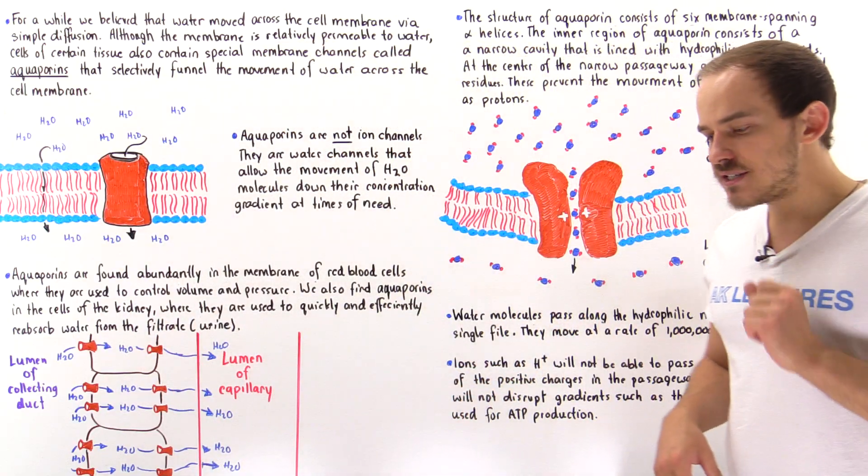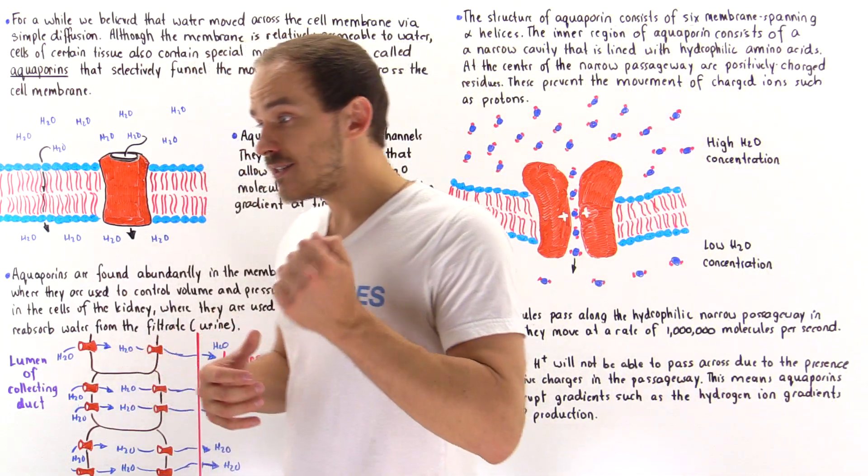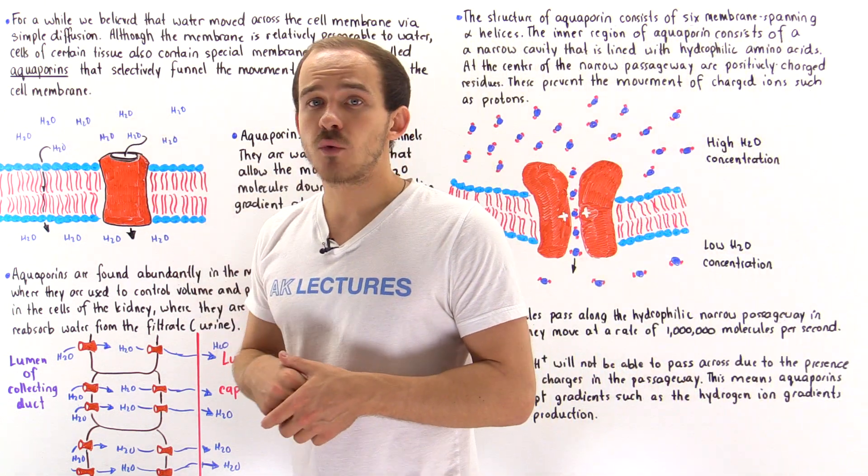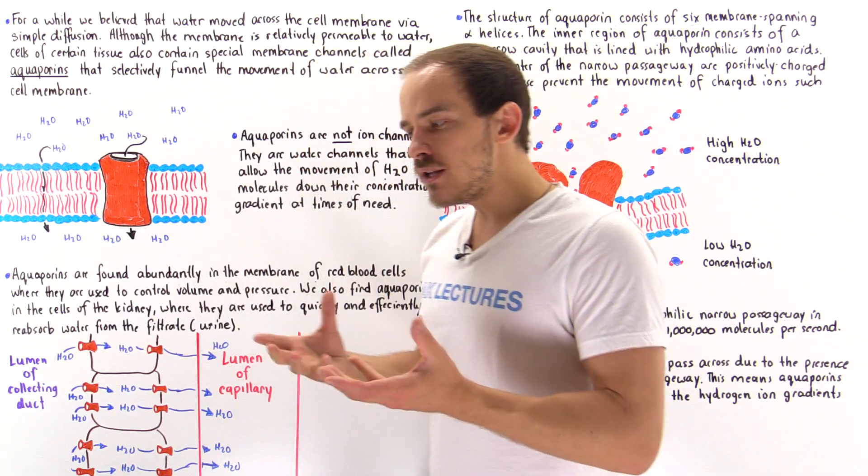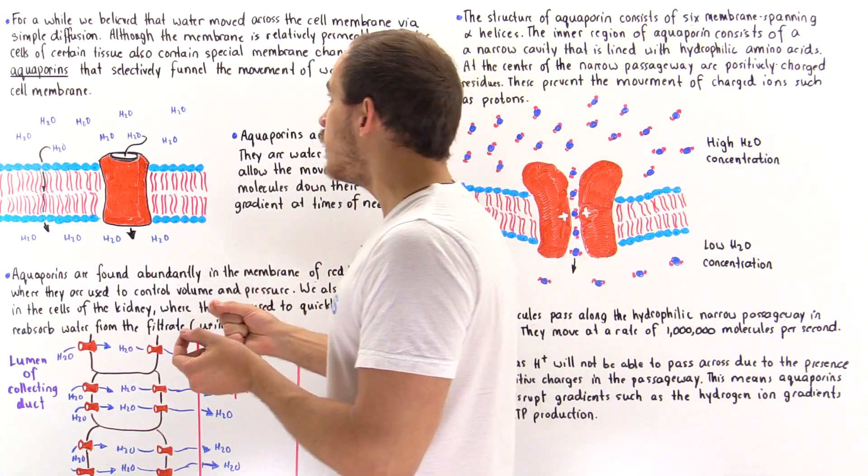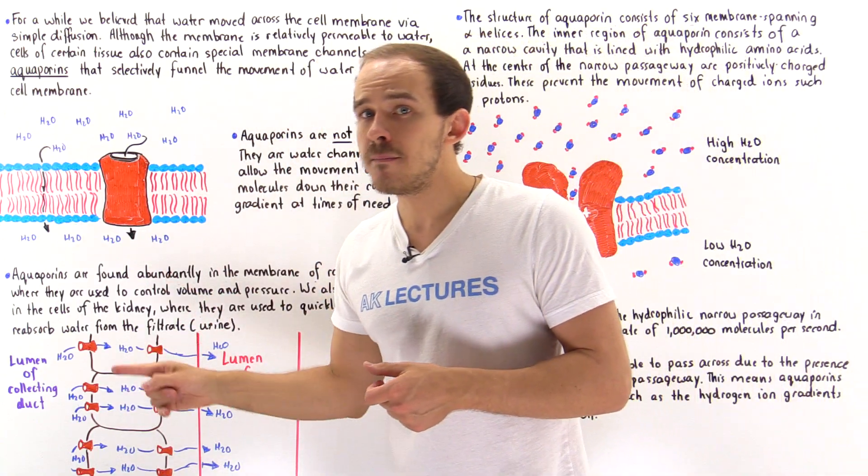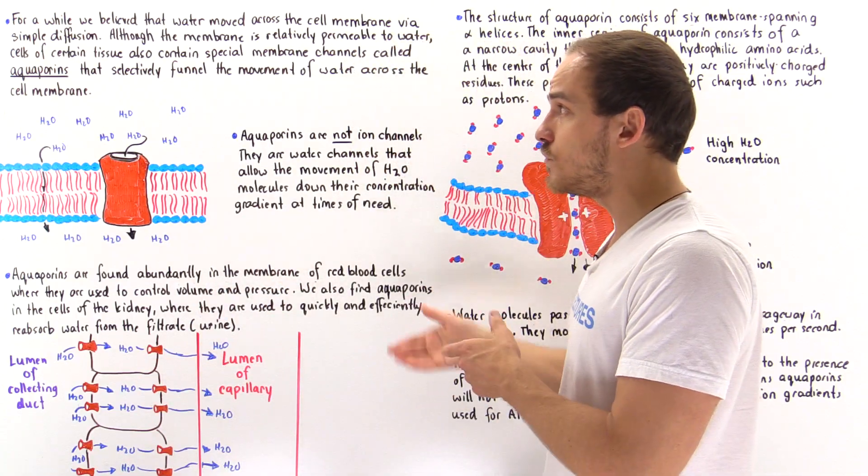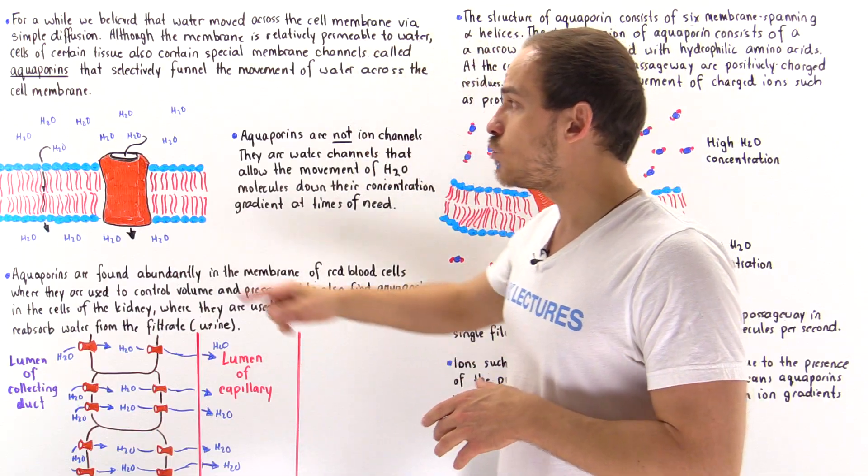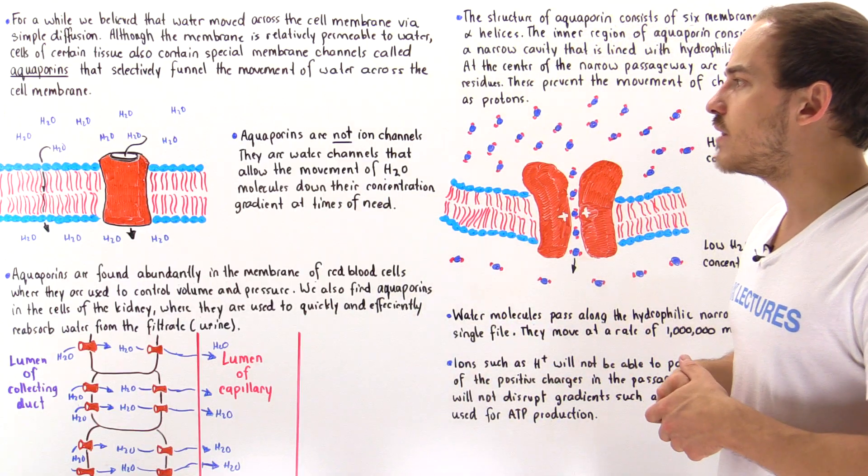In 1992, things actually changed because we basically discovered accidentally a special type of channel found in membranes known as aquaporins. We realized that these aquaporins are channels that selectively funnel and allow the movement of water molecules across the membrane. The rates at which water molecules move through these aquaporins are much higher than the rates at which water molecules actually diffuse through that phospholipid bilayer membrane.